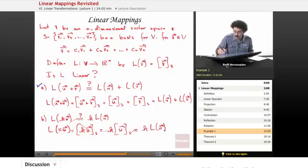So we've shown that L of KU equals K times L of U. So yes, B is also taken care of.